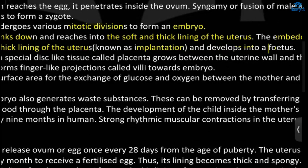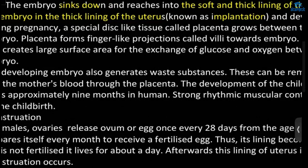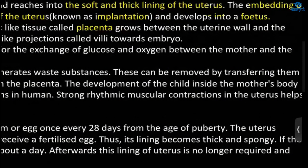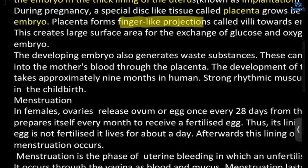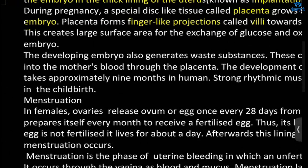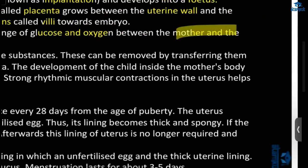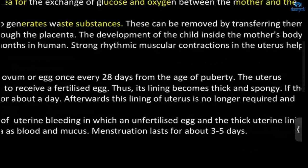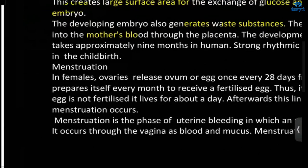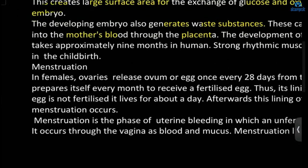After implantation, it will develop into a fetus. During pregnancy, there will be a disc-shaped tissue called the placenta, which connects the uterine wall and the embryo. It forms finger-like projections called villi towards the embryo, creating a large surface area for the exchange of glucose and oxygen between mother and child. The developing embryo also generates waste, which is removed by transferring it to the mother's blood through the placenta. This development of the child inside the mother's body takes approximately nine months in humans.